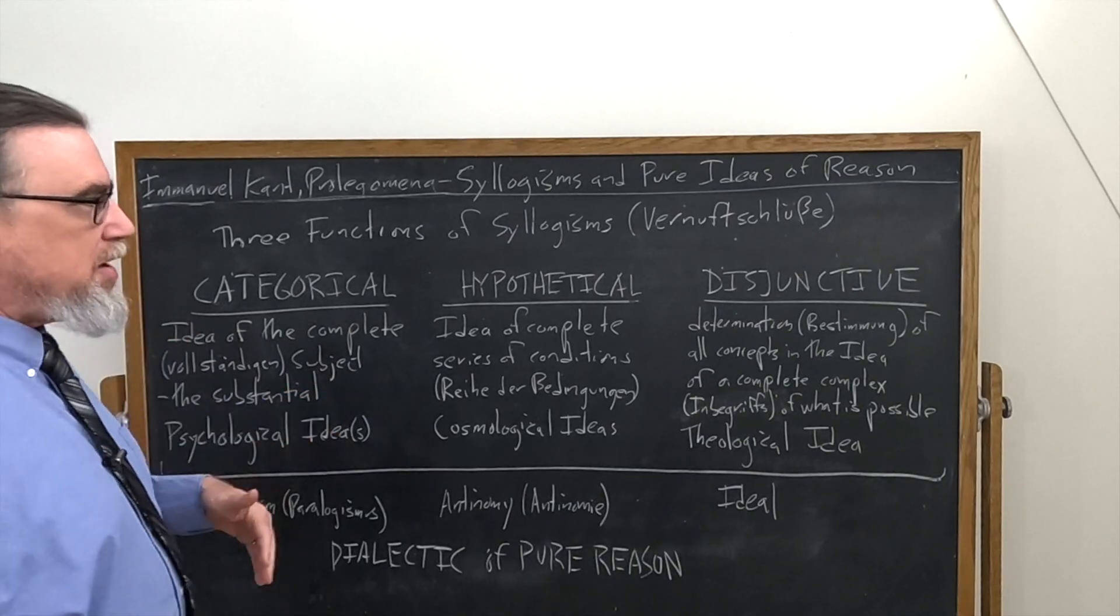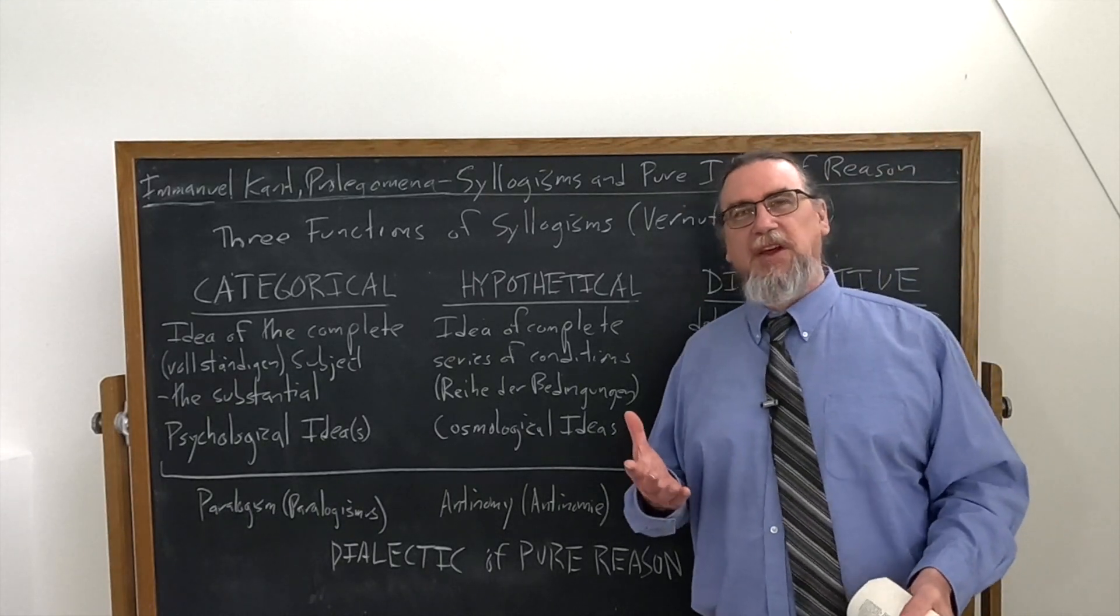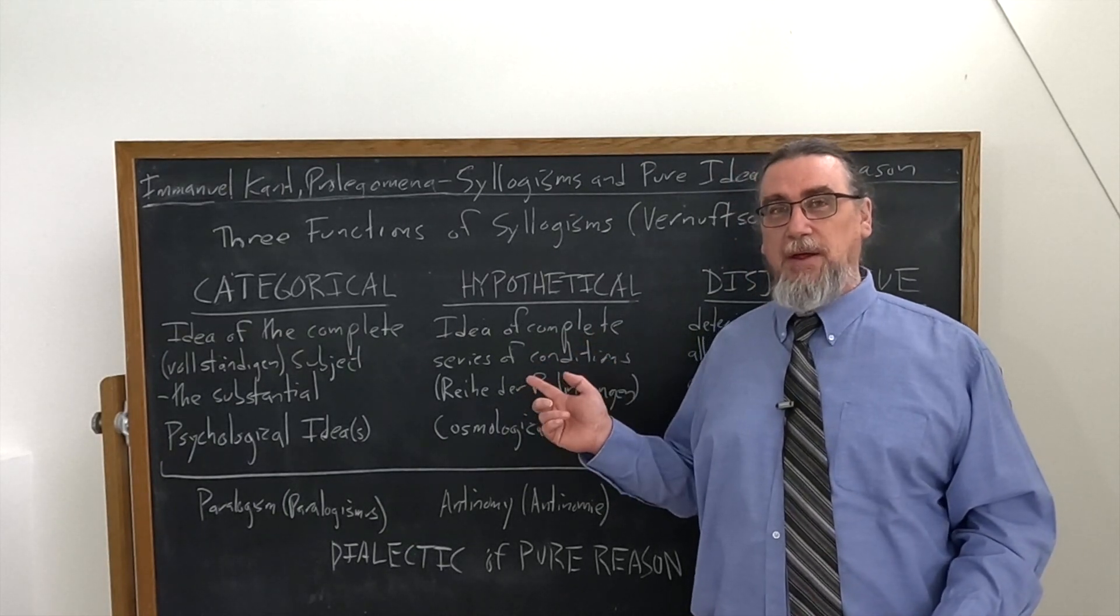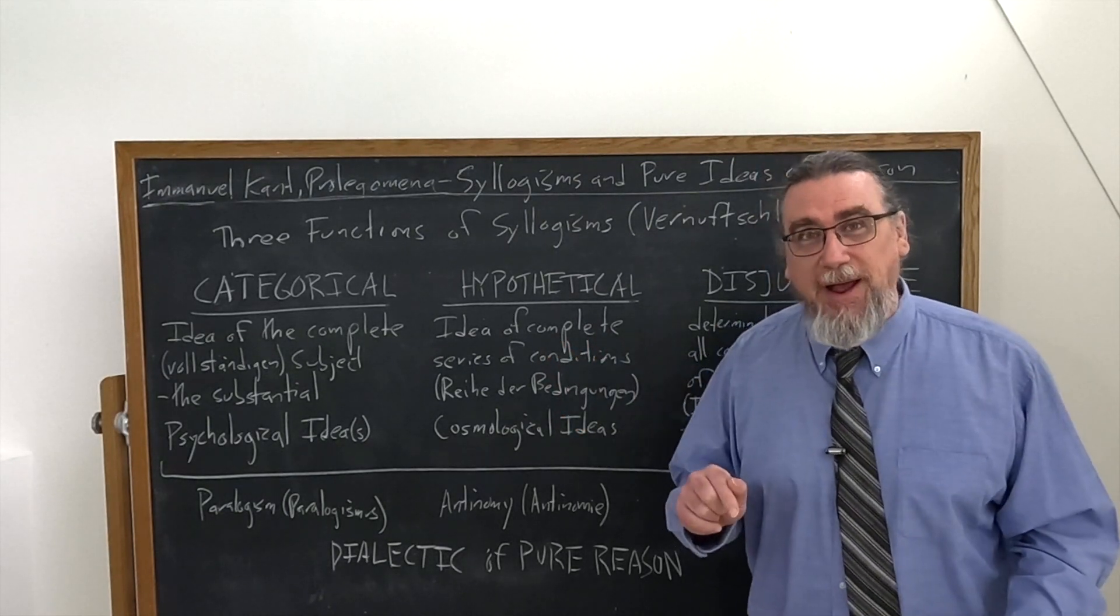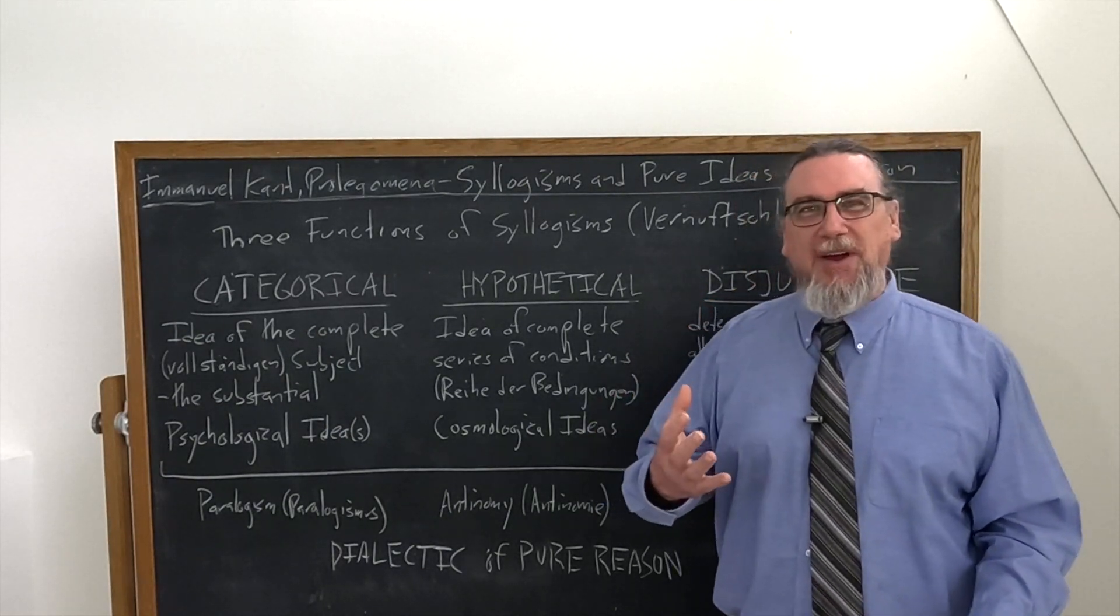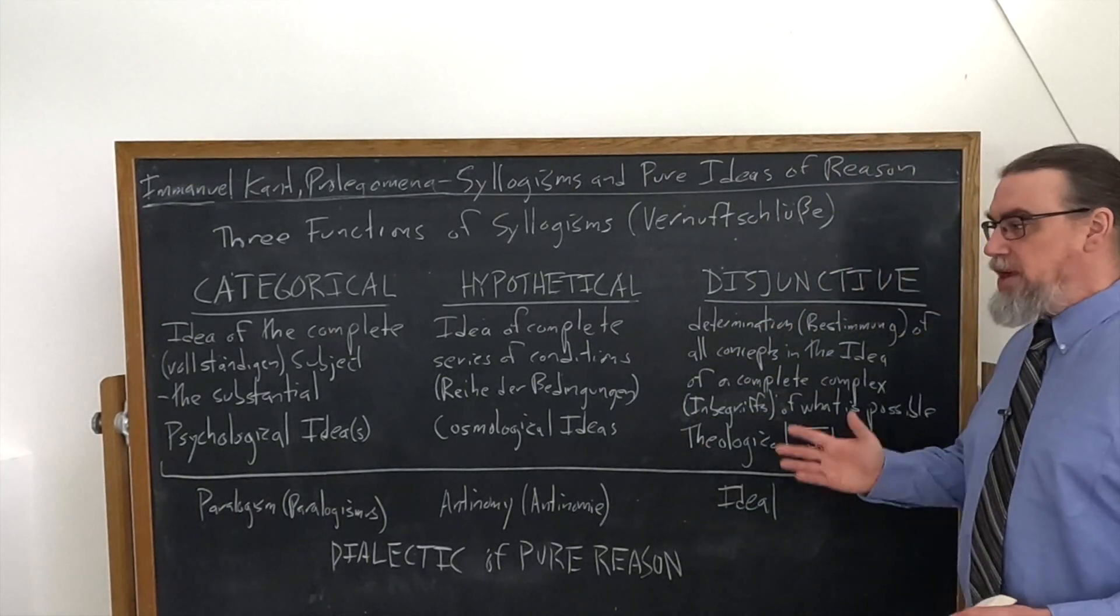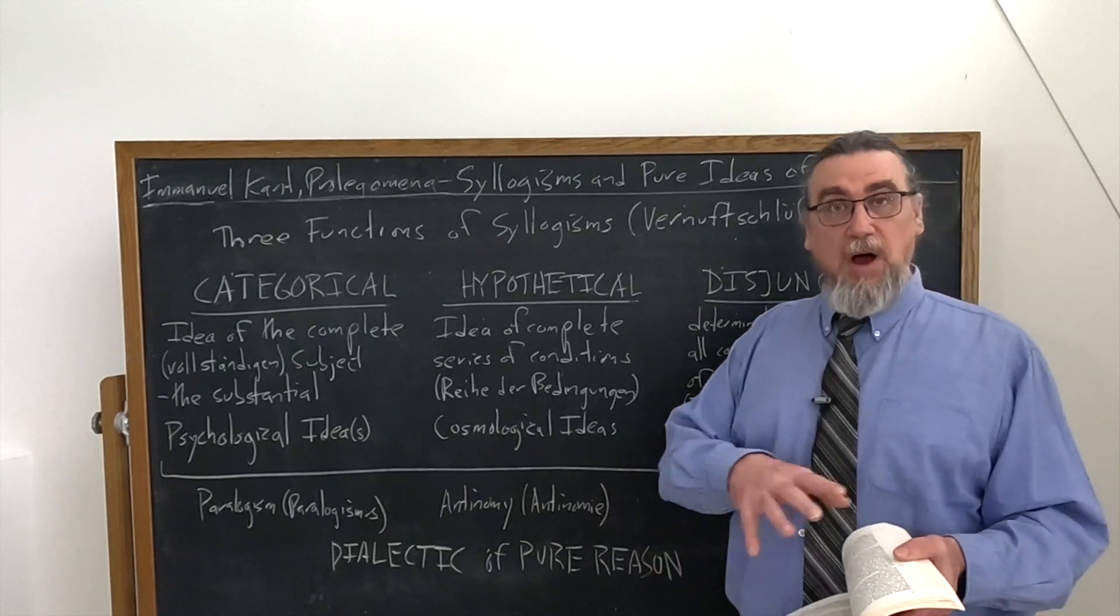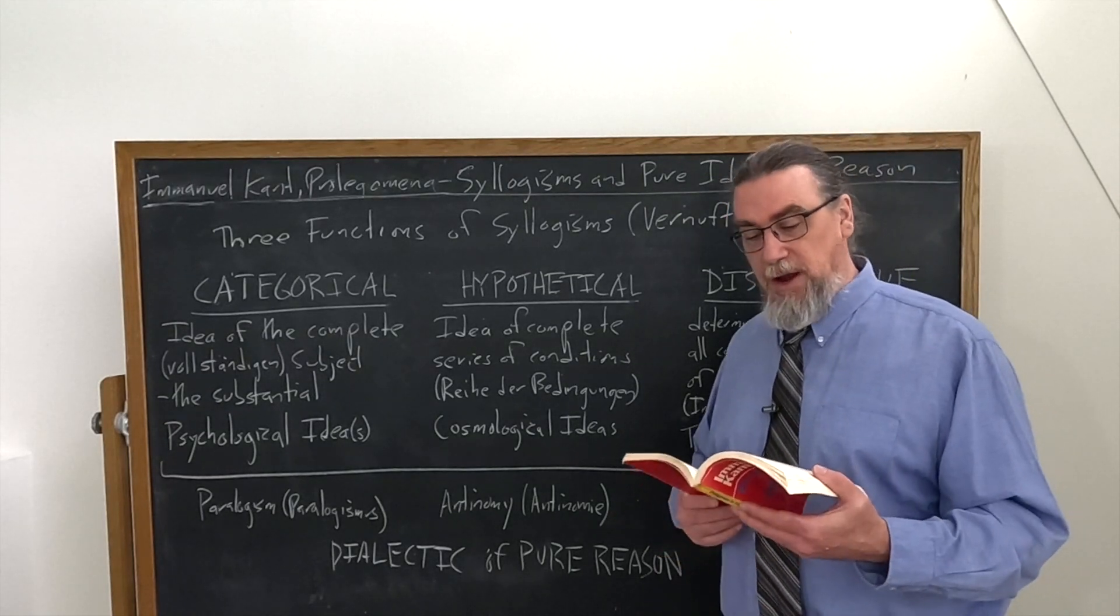And here's the ultimate payoff of making all these distinctions. Each of these is a way in which reason, when it's not controlling itself critically, leads us astray and gives us bad metaphysics as a product of that. It generates illusions, errors, that we can get drawn into. And Kant is going to call this the dialectic of pure reason, which much of this part of the prolegomena, as I mentioned earlier, is indeed about.